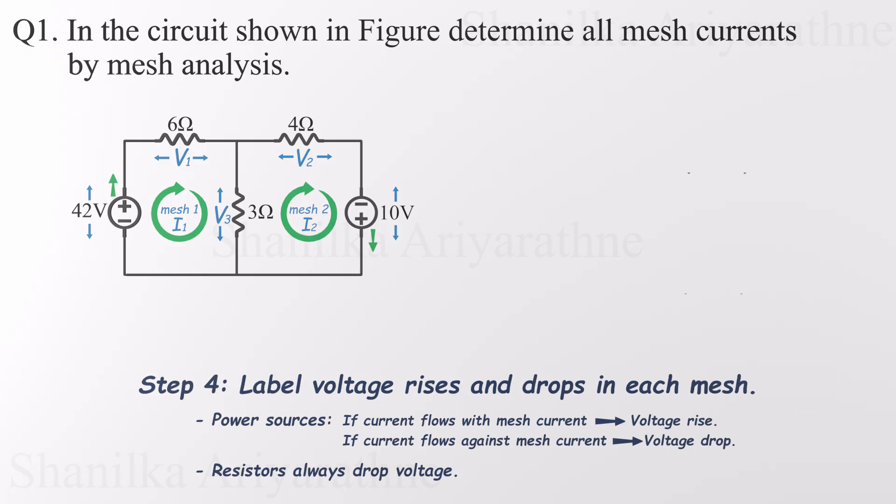Now let's identify the voltage rises and drops based on our mesh current directions. For power sources, here's the rule. If the current flows with the mesh current, it's a voltage rise. If it flows against it, it's a voltage drop. Resistors, on the other hand, are always voltage drops. No exceptions.